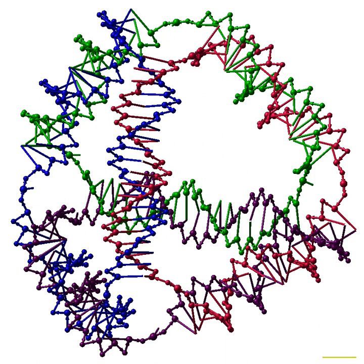In DNA nanotechnology, the component materials are strands of nucleic acids such as DNA; these strands are often synthetic and are almost always used outside the context of a living cell. DNA is well suited to nanoscale construction because the binding between two nucleic acid strands depends on simple base pairing rules which are well understood, and form the specific nanoscale structure of the nucleic acid double helix. These qualities make the assembly of nucleic acid structures easy to control through nucleic acid design.